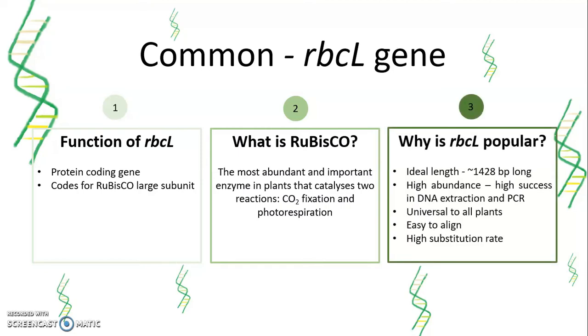And why is it a popular genetic marker? It has ideal length, high abundance which ensures high success in gene extraction and amplification, universal to all plants so we can use the published primers for PCR, and it is easy to align. rbcL also has high substitution rates, so it provides informative sites to distinguish among organisms at low taxonomic level.